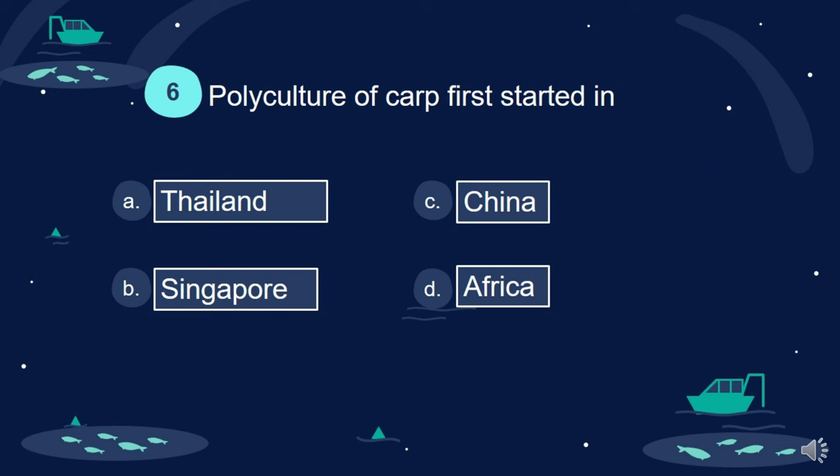Polyculture of carp first started in: A. Thailand. B. Singapore. C. China. D. Africa.